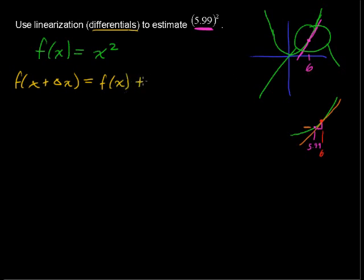Plus the slope, the instantaneous slope at that point, at 6, or at some value x, multiplied by the change in x. And our change in x here is negative, because we're subtracting off of 6, negative 0.01. So I'm going to put that over to the side here. x equals 6, and delta x equals negative 0.01.